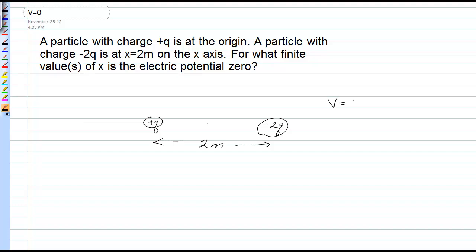Voltage is a scalar quantity found by the formula kq over r, where r is the distance from the charge to the point where you want the voltage. I have three possible regions where this voltage may be zero: either to the left of the small charge, between the two charges, or to the right of the big charge.